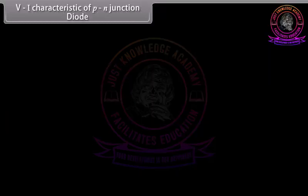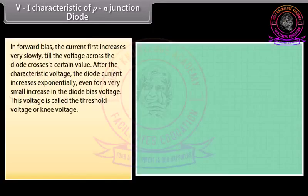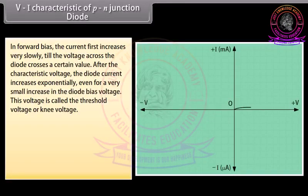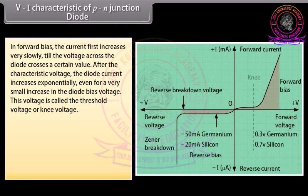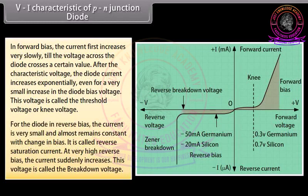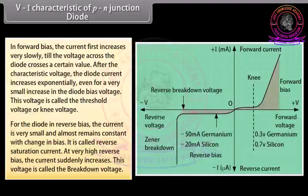V-I characteristics of a P-N junction diode: in forward bias, current first increases very slowly until the voltage crosses a certain value, after which the diode current increases exponentially even for a very small increase in bias voltage. This voltage is called the threshold voltage or knee voltage. In reverse bias, the current is very small and almost constant — called the reverse saturation current. At very high reverse bias, the current suddenly increases; this voltage is called the breakdown voltage.